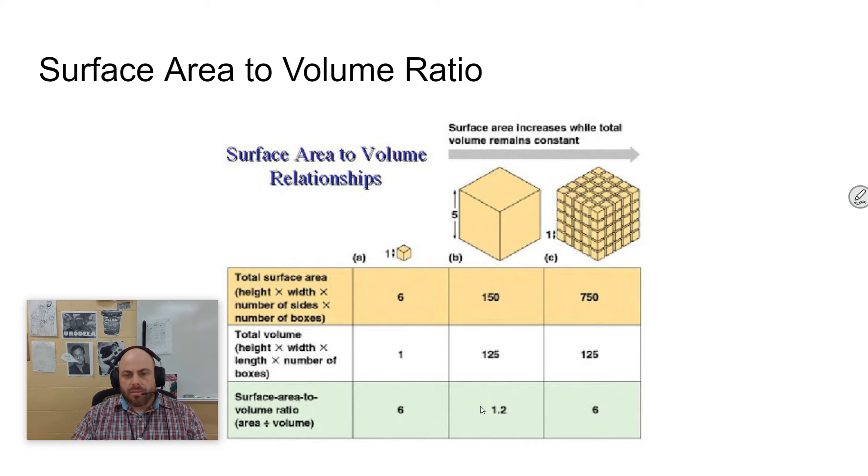Cells want to maintain a high surface area to volume ratio. The higher the surface area to volume ratio, the more efficient the cell is.